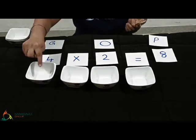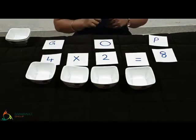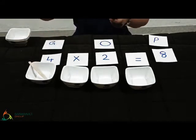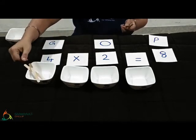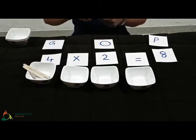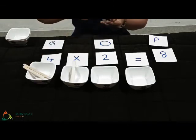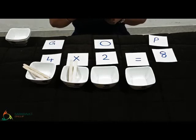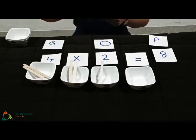So in each ball, I will place 2 candy sticks because 2 is the object. So this is 1 and 2. Now in the second ball, 1 and 2. In the third ball, 1 and 2.